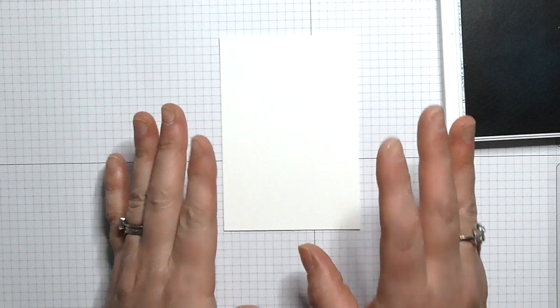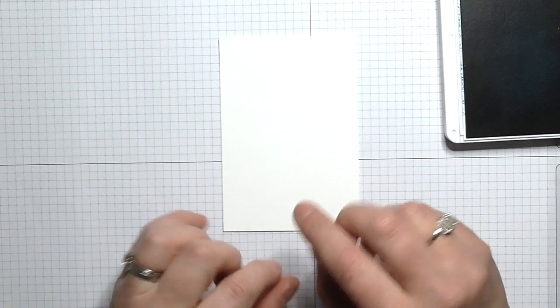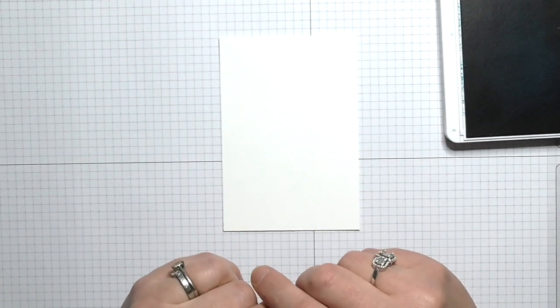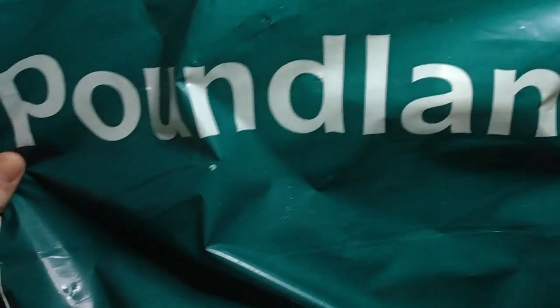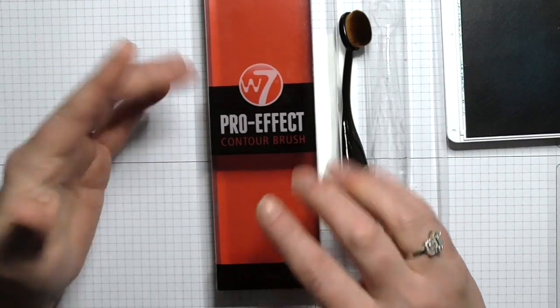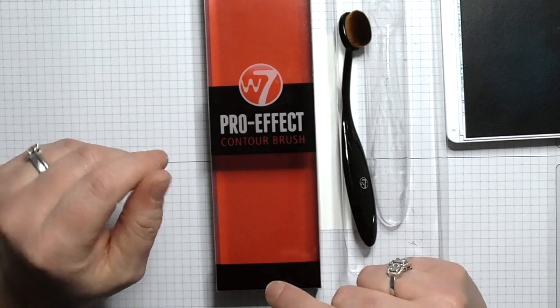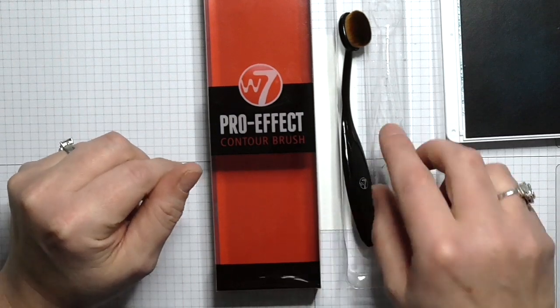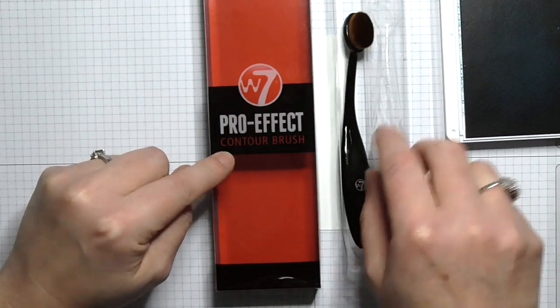Then today I'm in my local Poundland, if I just show you the branding, it's that one. They have these, and their own brand of cheap makeup is called Pro Effect. I've used it myself and it's not bad. They've got these contour brushes and they're the same principle.